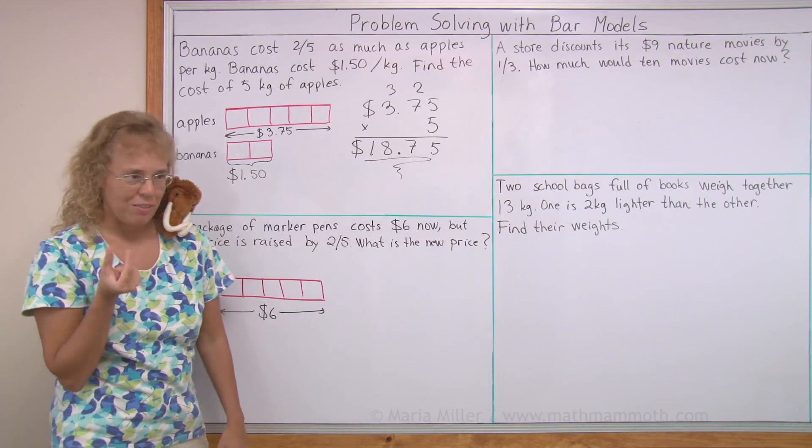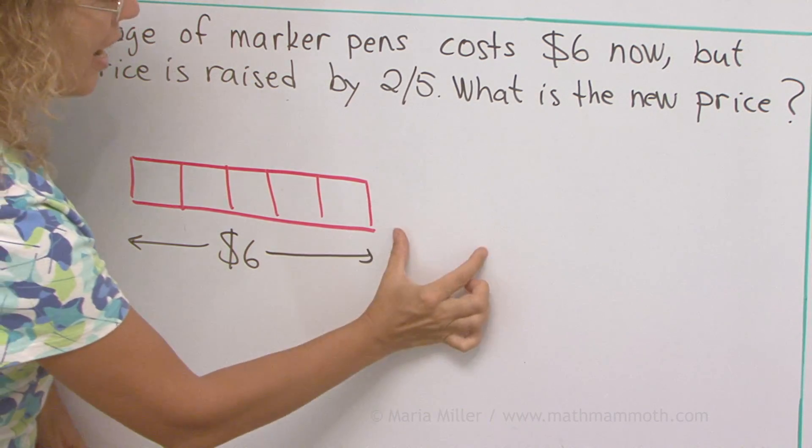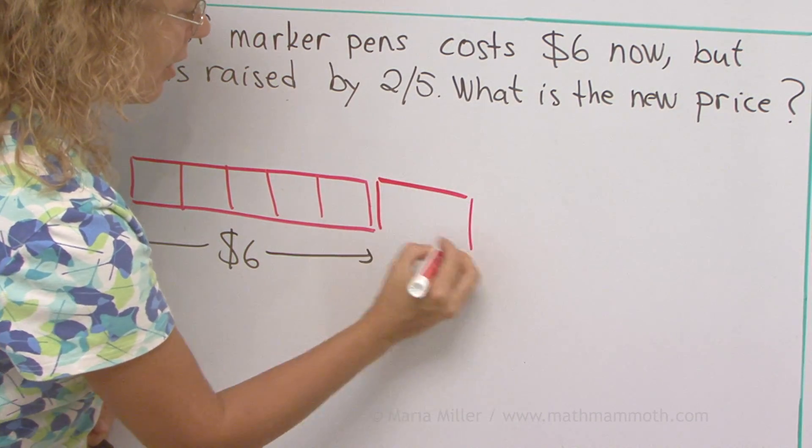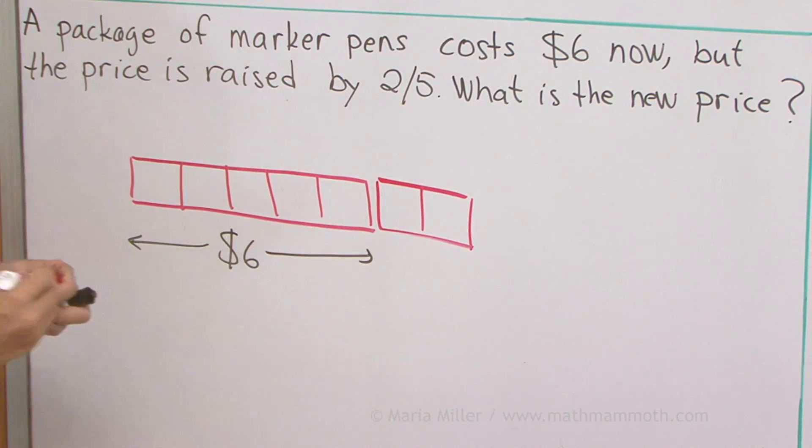And then if we take two-fifths, two of these blocks, and add them here, then that's going to be the new price, kind of like taking these two blocks, and now this is going to be the new price.